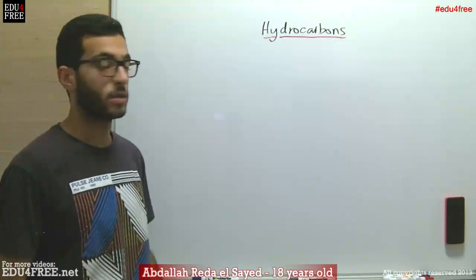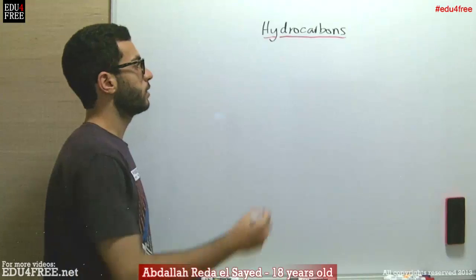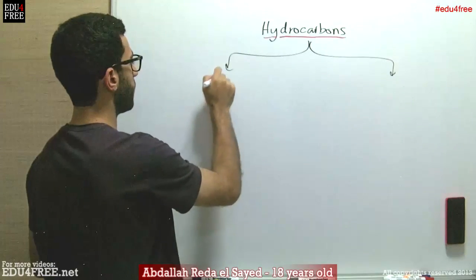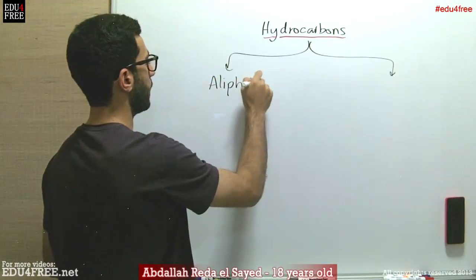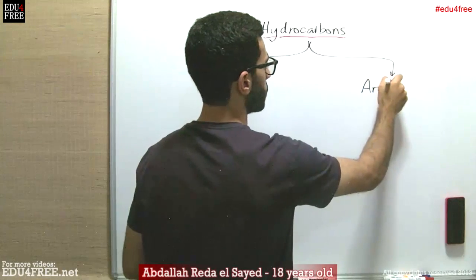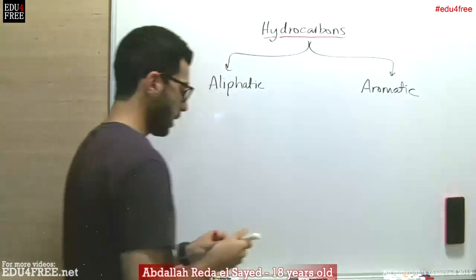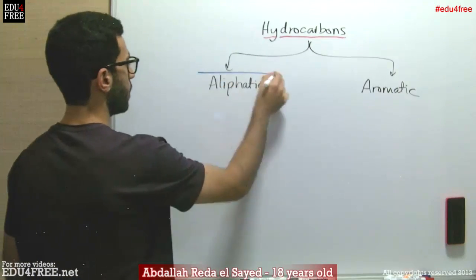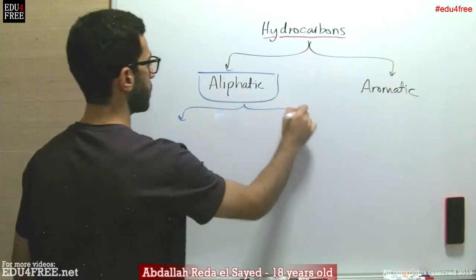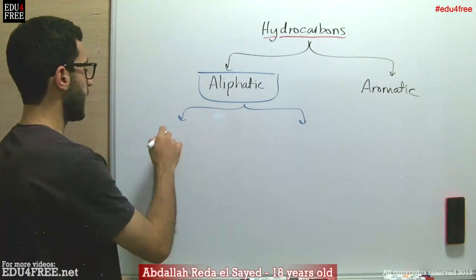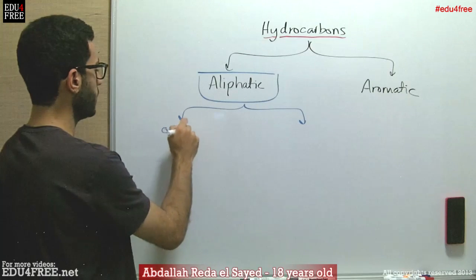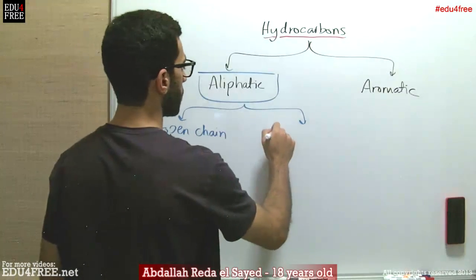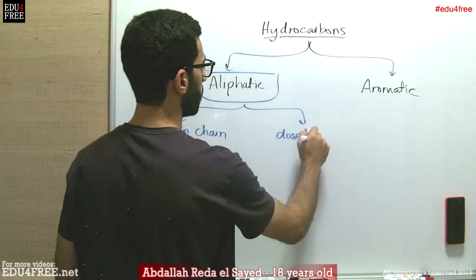Today we are going to talk about the classification of hydrocarbons. Hydrocarbons are mainly divided into two types: aliphatic hydrocarbons and aromatic hydrocarbons. As for the aliphatic hydrocarbons, they consist of two types — open chain aliphatic hydrocarbons and closed rings.